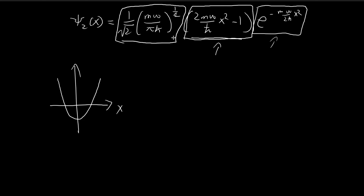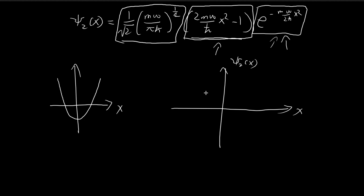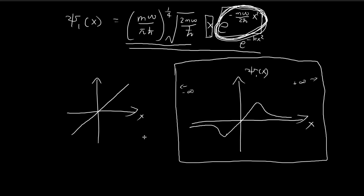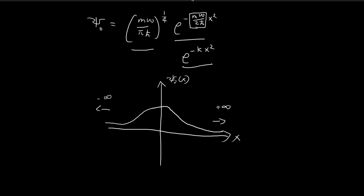This is just a quadratic function with an intercept at negative 1. We apply the same reasoning as before: near the origin, the e term is approximately equal to 1, so it doesn't change the shape much, and the graph looks approximately like a parabola. But as you tend toward infinity with x getting larger, the e term starts to dominate and pushes this graph down toward zero. So in the end you get a modified parabola that approaches zero on both sides. This is the graph for the second stationary state, and this is how you graph the three stationary states.